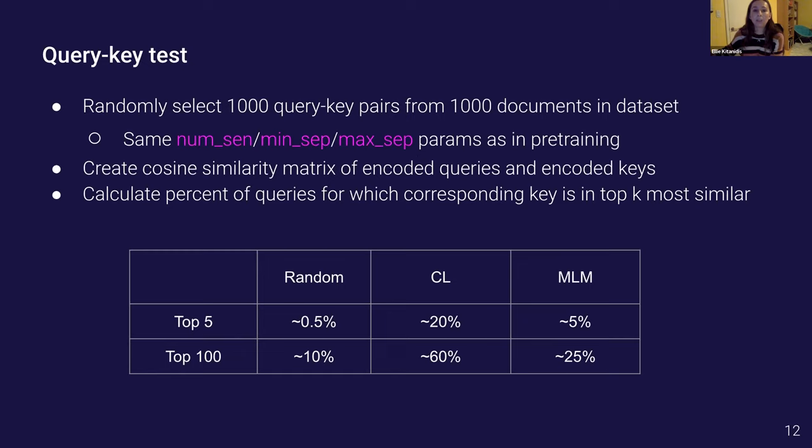As another sort of probe we decided to see how well the model can match queries to relevant keys. We randomly selected a thousand text pairs from the data with the same selection parameters as were used in pre-training and we let these be query key pairs. We then created a cosine similarity matrix of encoded queries dotted with encoded keys and calculated the percent of queries for which the corresponding key was in the top K most similar. For example out of a thousand query key pairs if the model is totally random I would expect that the matching key to be in the query's top five most similar 0.5% of the time.